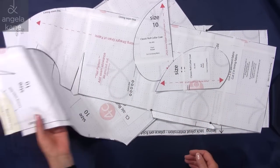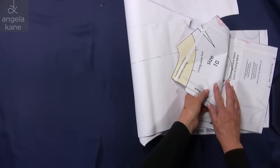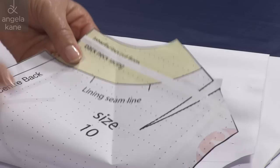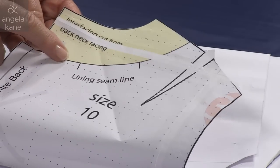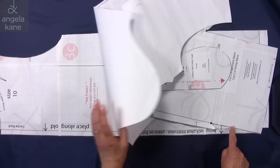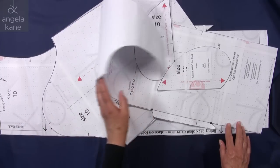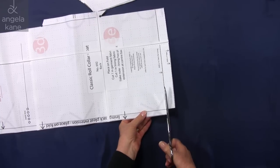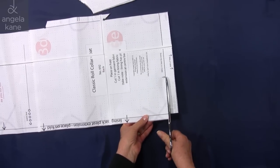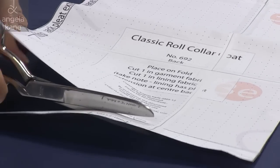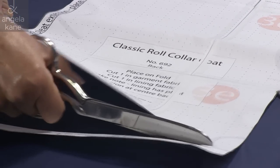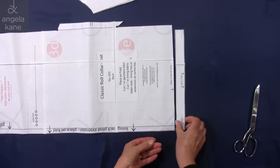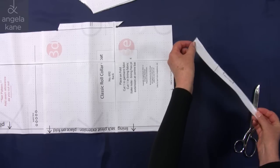We need to make a couple of changes to our pattern. Here we need to cut off the back neck interfacing. We also need to remove an inch from the lining hemline. We can tape it back on afterwards of course, or we can download a fresh pattern.